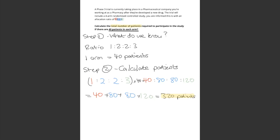When they say 40 patients in each arm, that is equivalent to the ratio of 1. So if it's 40 patients per arm and the ratio starts with 1, then that is equal to 40. So if it's 40 for 1, then it's 80 for 2, if that makes sense. I've colour coded it for you.